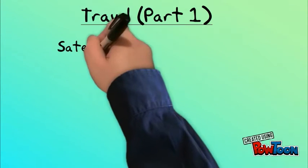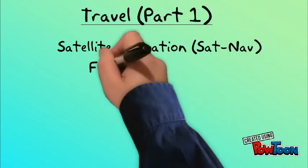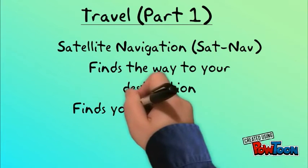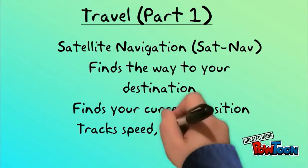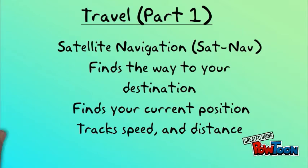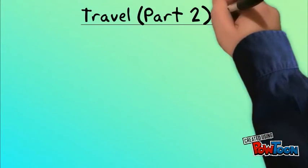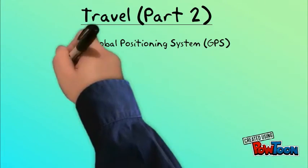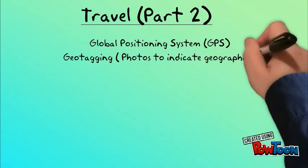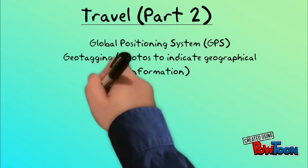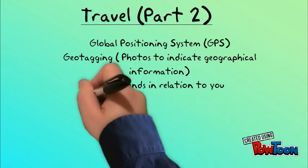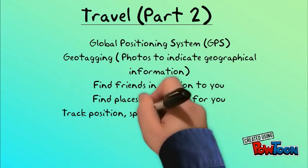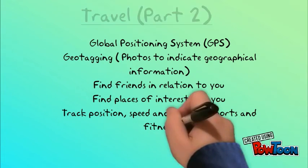In travel, satellite navigation can find your destination, find your current position, and track your speed and distance travelled. The global positioning system can be helpful for geotagging, finding close friends, finding places of interest, and tracking position, speed, and times for sports and fitness.